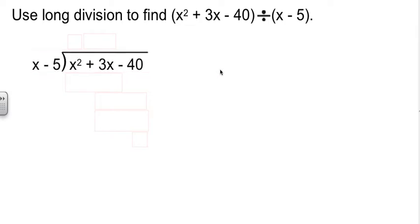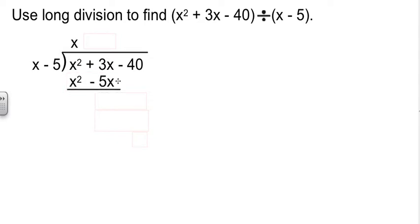We're going to set the problem up the same way: X minus 5 divides into X² plus 3X minus 40. When you do polynomial long division, you want the terms in order from biggest power to smallest power. What can you multiply X by to get X²? We'd need to multiply by X. Distribute this to each term: X times X is X², and X times negative 5 is negative 5X.